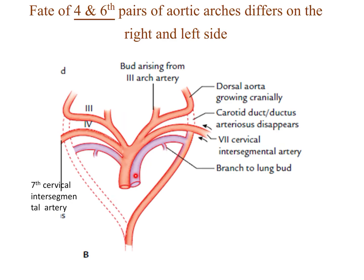The artery to the lung bud arises from the sixth arch artery. The part proximal to it, on both sides, will form the right and left pulmonary arteries. The part distal to it on the right side will degenerate, but on the left side it will persist and form the ductus arteriosus.